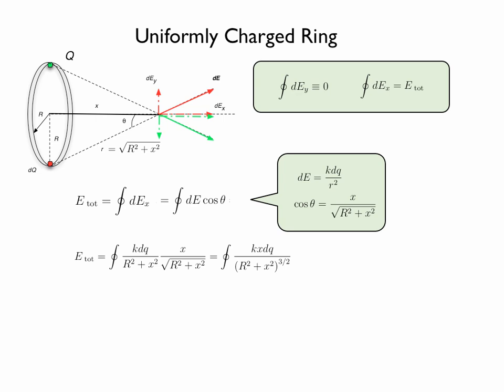Or simply the electric field will be the integral over k x dq over r squared plus x squared to the power of three halves. Now this integral is very easy to solve since the only variable is dq the charge of those infinitely small elements and after an integration over the entire ring it will turn out to be simply q.